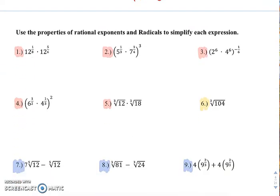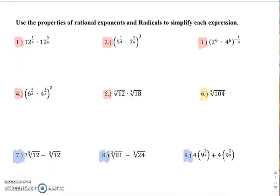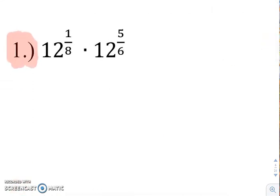So moving on, we're going to look at multiplying some of these expressions. So let's look at number one, 12 to the 1 eighth times 12 to the 5 sixth. In order to work with fractions, we have to remember our fraction rules. If we want to be able to add our exponents, which are fractions, the only way to add fractions is to have like denominators.